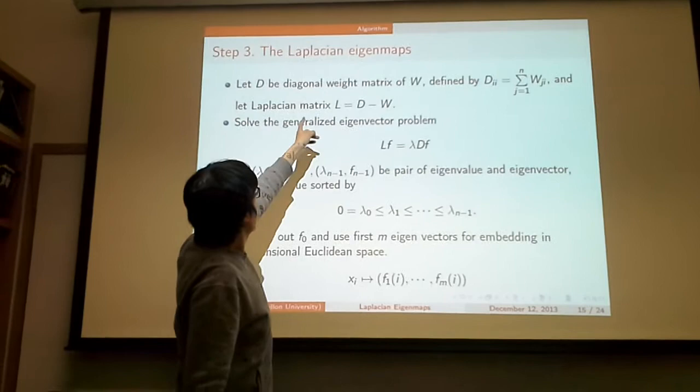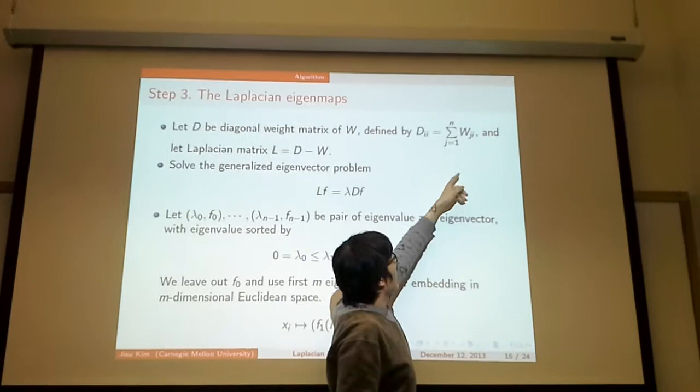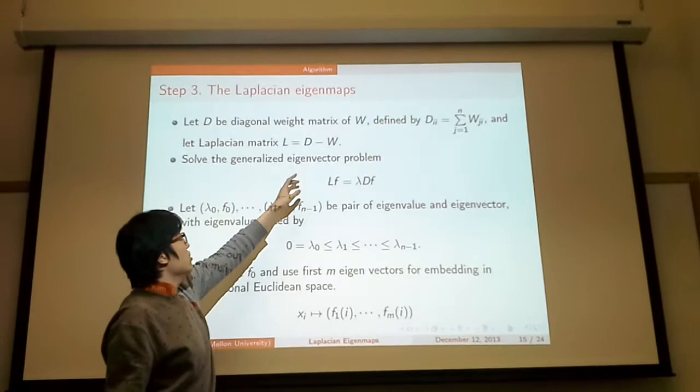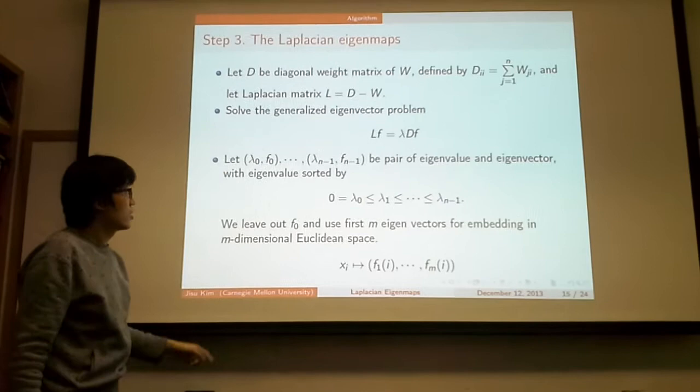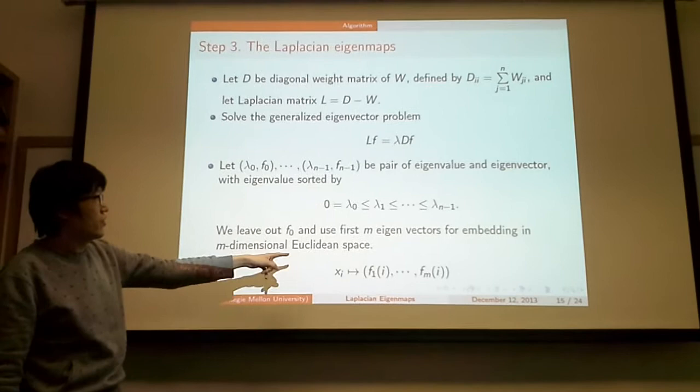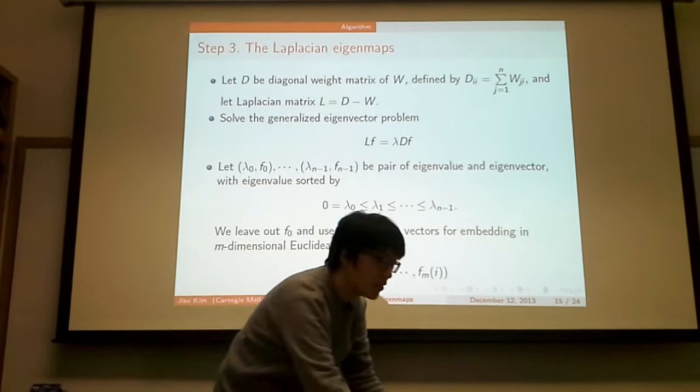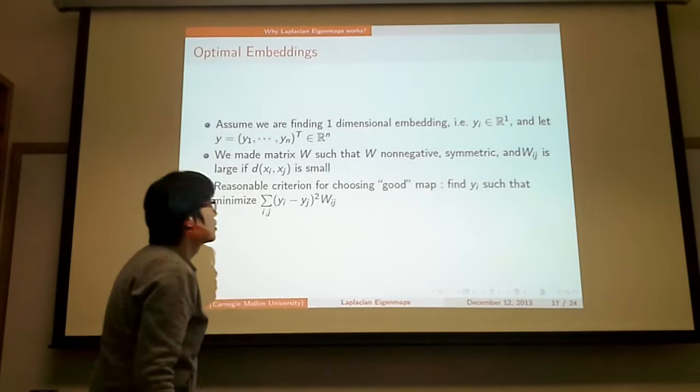The third step is: let D be the diagonal weight matrix of W defined by Dii being the column sum of W. And let L be D minus W. Then we solve the generalized eigenvalue problem Lf equals lambda Df. Let these be pairs of eigenvalues and eigenvectors with eigenvalues sorted in increasing order. Then we leave out f0 and use the first m eigenvectors for embedding in m-dimensional Euclidean space.